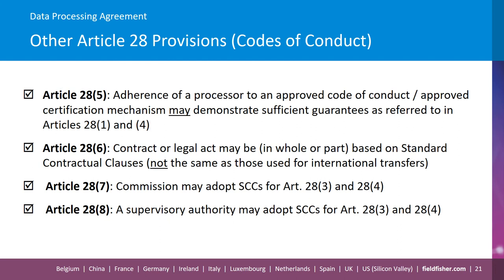Moving on to other Article 28 provisions. Article 28.5 says that adherence of a processor to an approved code of conduct or approved certification mechanism may demonstrate sufficient guarantees as referred to in Articles 28.1 and 28.4. Article 28.6 states that the contract or legal act may be, in whole or in part, based on standard contractual clauses — note that these are not the same as those used for international transfers. The European Data Protection Board has provided two opinions on standard contractual clauses so far, for Denmark and Slovenia, and Denmark has issued its final version which the ICO has said is acceptable. Article 28.7 states that the Commission may adopt standard contractual clauses for Articles 28.3 and 28.4, and Article 28.8 states that a supervisory authority may do the same.